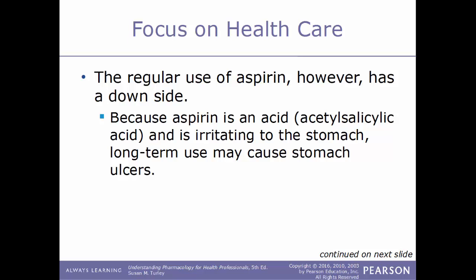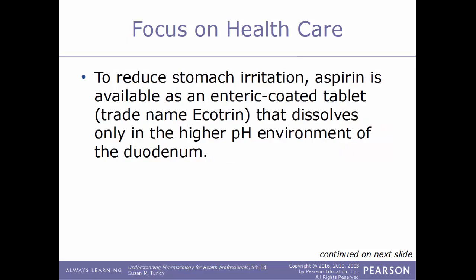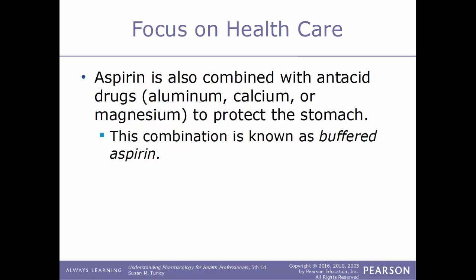The regular use of aspirin does have a downside. Because aspirin is an acid, it is irritating to the stomach, and long-term use may cause stomach ulcers. To reduce stomach irritation, aspirin is available as an enteric-coated tablet sold under the trade name Ecotrin, which dissolves only in the higher pH environment of the duodenum — the first part of the small intestine — and is not broken down by stomach acids. Aspirin is also combined with antacids like aluminum, calcium, or magnesium to protect the stomach, known as buffered aspirin.